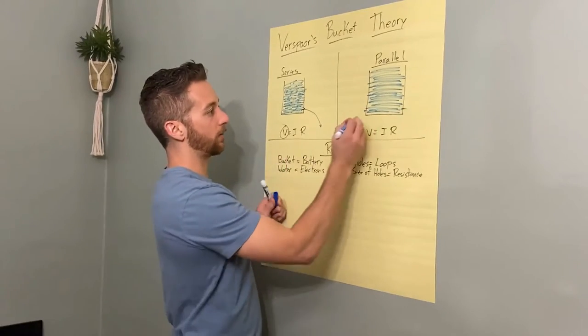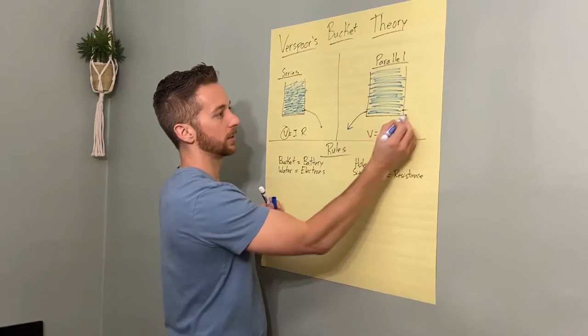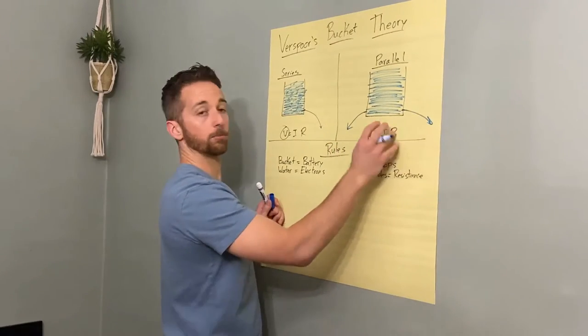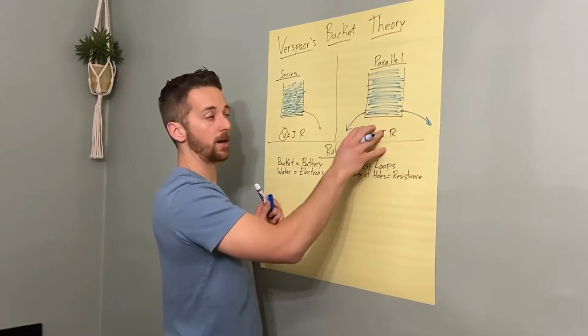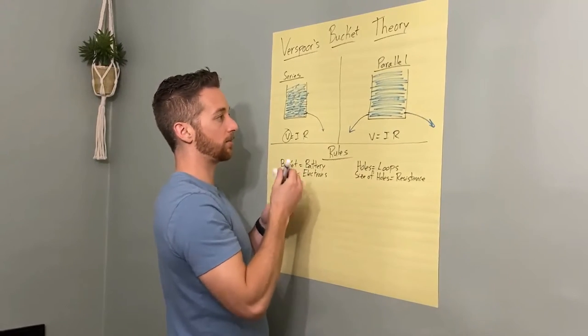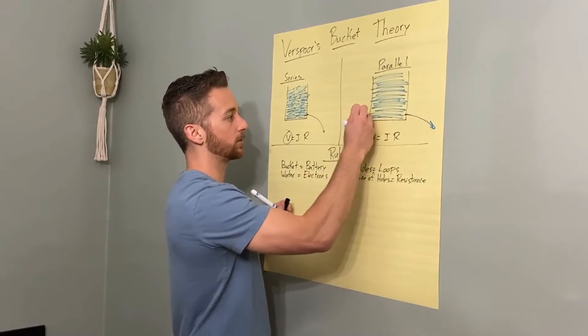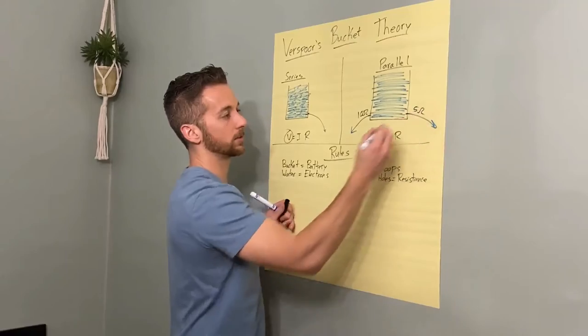So now we have one path with some resistance. And now we have another path. Both have a resistance. Both have a positive resistance. Let's give them numbers here. Let's say this one is 10 ohms and this one is five ohms, right?